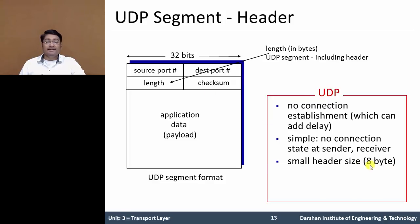Let's calculate how the header is 8 bytes in UDP. 32 bits divided by 8 equals 4 bytes. So source port and destination port together make 4 bytes. For length and checksum, another 4 bytes. So total 4 plus 4 equals 8 bytes. These remaining fields are the data. UDP segment header information contains 8 bytes, whereas TCP segment contains 20 bytes, which we will discuss later.